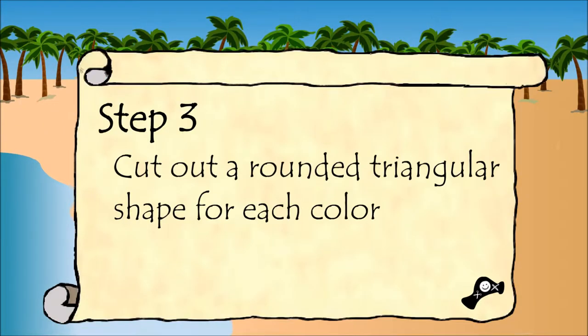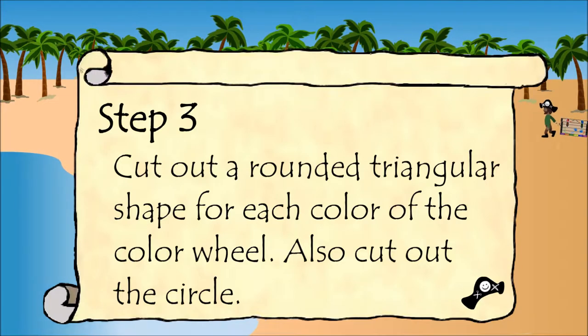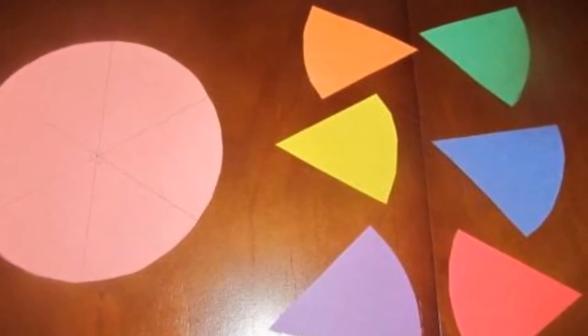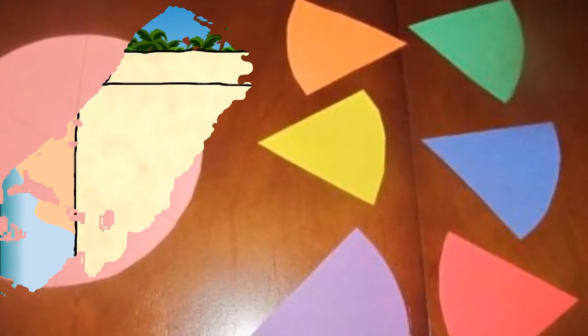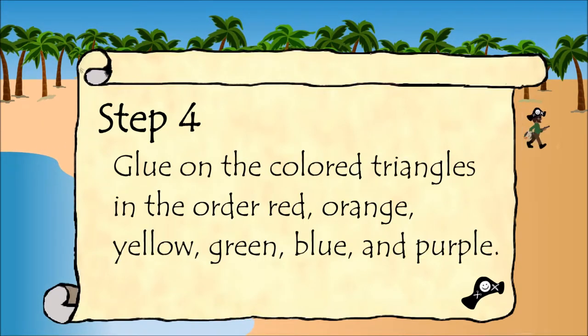Step three: cut out a rounded triangular shape for each color of the color wheel. Also cut out the circle. Step four: glue on the colored triangles in the order red, orange, yellow, green, blue, and purple.